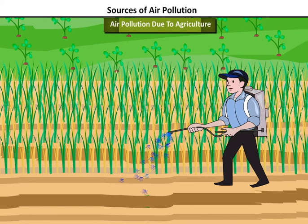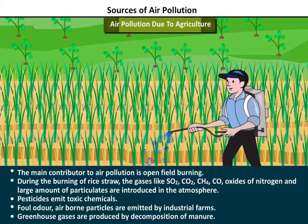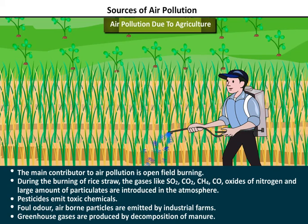Air Pollution Due to Agriculture: The main contributor to air pollution is open field burning. During the burning of rice straw, gases like SO2, CO2, CH4, CO, oxides of nitrogen, and large amounts of particulates are introduced into the atmosphere. Pesticides emit toxic chemicals. Foul odor and airborne particles are emitted by industrial farms. Greenhouse gases are produced by the decomposition of manure.